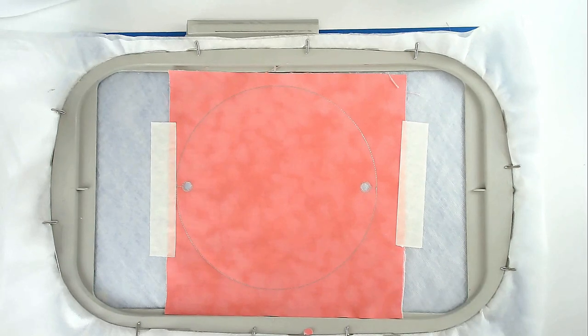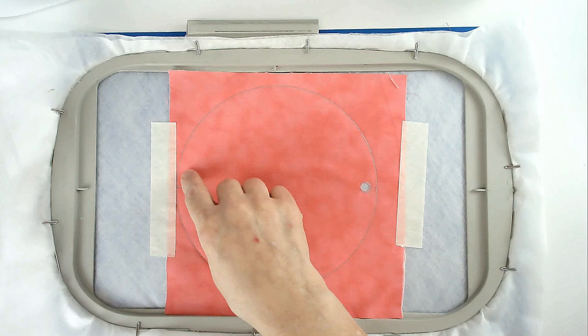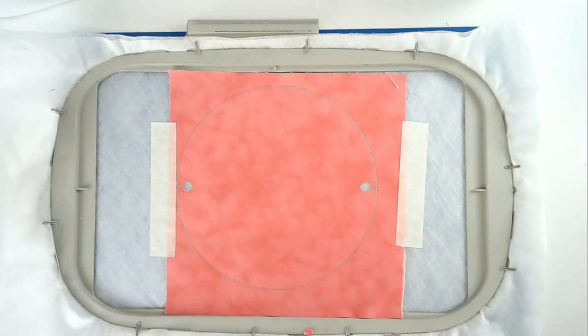You're now going to pop your hoop into your machine and stitch round number three, and that's going to do the satin stitching around your eyelets. And I'm staying with silver throughout. If you want to change your thread color, you can do so now.